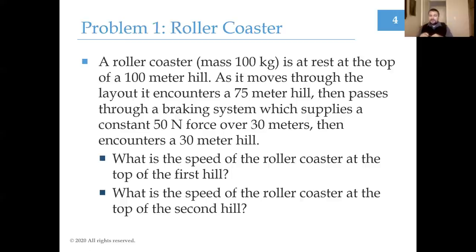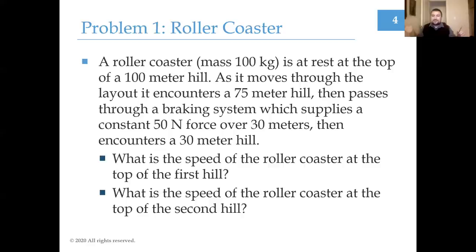The braking systems slow the coaster down so it can make the final turns without experiencing too many g-forces. The questions are: first, what is the speed of the roller coaster at the top of the first hill, and second, after passing through the braking system, what is the speed at the top of the second hill? I haven't actually attempted solutions to any of these problems — I pulled numbers out of the air — so the big thing here is the procedure and solution method. Make sure you have this problem copied down.